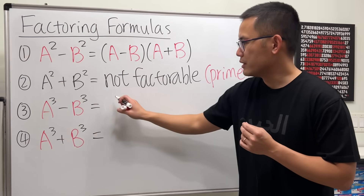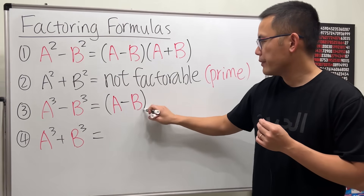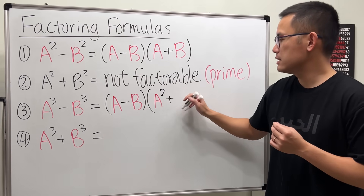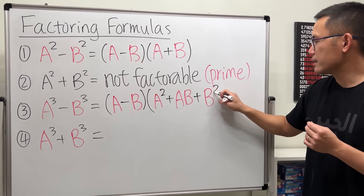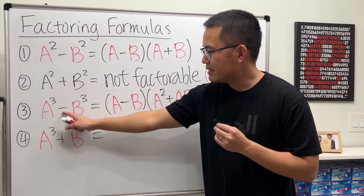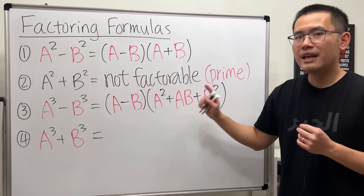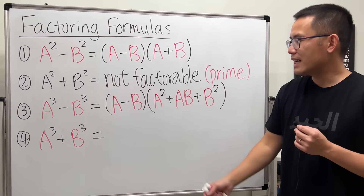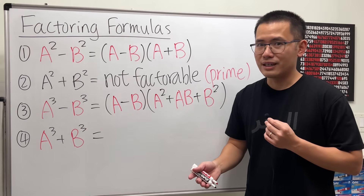For the third one we have a difference of two cubes. The formula for this is a minus b, times a squared plus ab plus b squared. Notice if it's a minus first, we'll have a minus, then you change the sign to a plus, and the last term is also a plus. Notice there is no 2 — this is not the result of a special product.